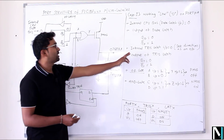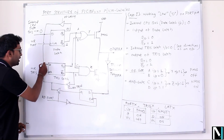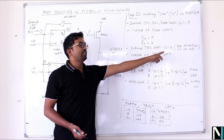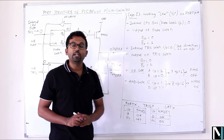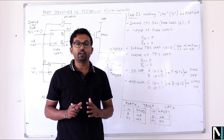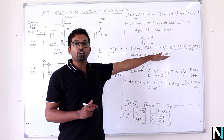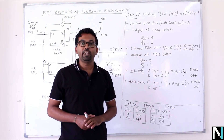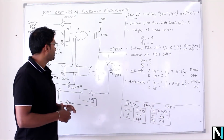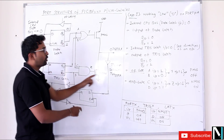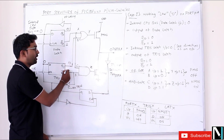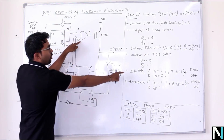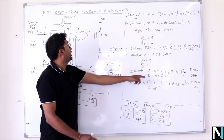For the internal TRIS latch, I write input as zero because writing zero to the TRIS register bit configures that port pin as an output. By default all pins of the PIC microcontroller are input-configured, so to drive data outside the microcontroller you must write zero into the TRIS register bit for that particular pin. With TRIS input = 0, the output QT = 0 and QT-bar = 1.